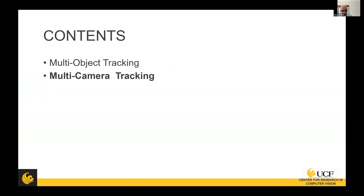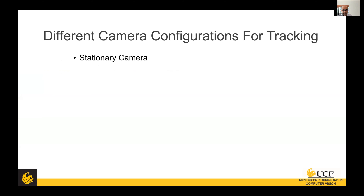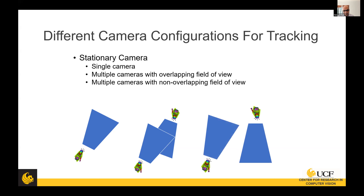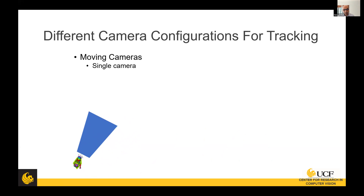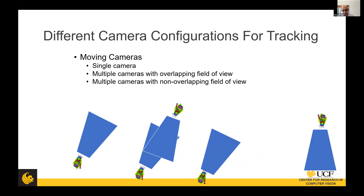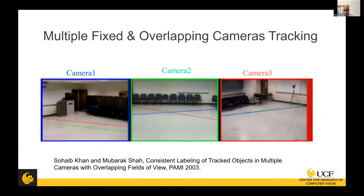If we look at tracking in general, what we've been discussing is the stationary single-camera case — a lot of work exists there, mostly MOT. But extending this, you can use multiple cameras with overlapping fields of view to cover a large area. If you don't have many cameras, you'll have non-overlapping fields of view. Another configuration is a single moving camera, then multiple moving cameras with overlapping or non-overlapping fields of view. We have worked in all these areas, starting a long time ago.